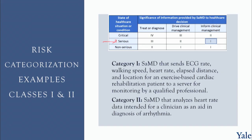Moving up to Class 2: this is software that analyzes heart rate data intended for a clinician as an aid in the diagnosis of arrhythmia. The condition is still serious — still a cardiac condition — but the output is used as an aid to diagnosis, not the sole factor. So we're driving clinical management.